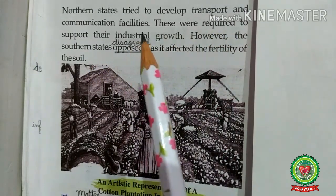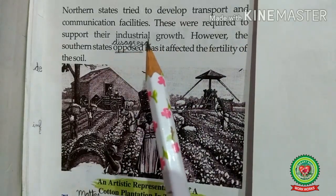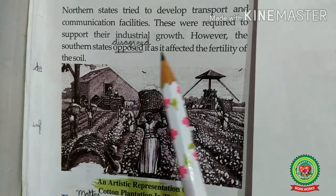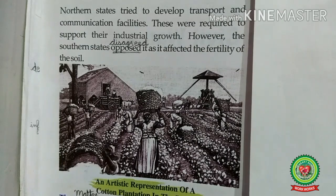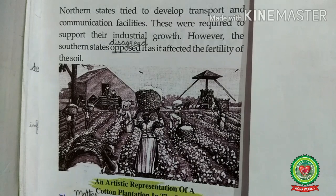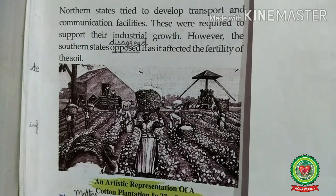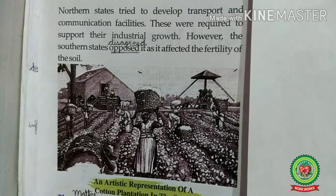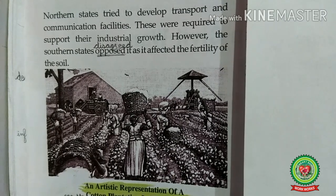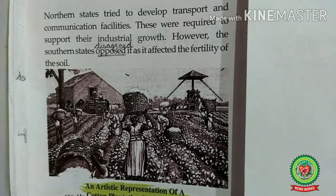The Northern states tried to develop transport and communication facilities to support their industrial growth. However, the Southern states opposed this as it affected the fertility of the soil. Overall, industry and finance dominated the North, while the South concentrated on farming — particularly the production of cotton, tobacco, and sugar for export to Europe. The conflicting economic interest was one of the first causes of the American Civil War.